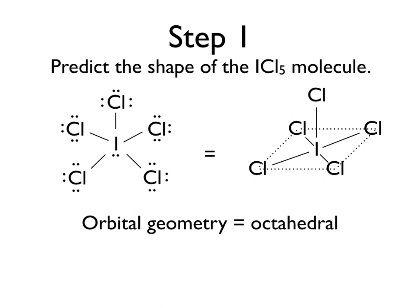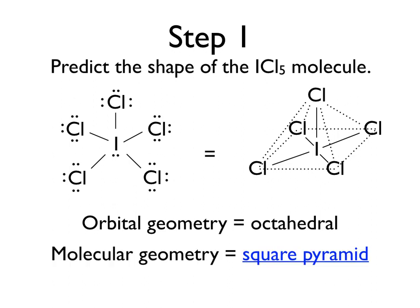Now we can see that for each of the chlorine atoms, if we draw a dashed line to the top chlorine atom, we have what resembles a square pyramid. And as such, our molecular geometry is square pyramidal.